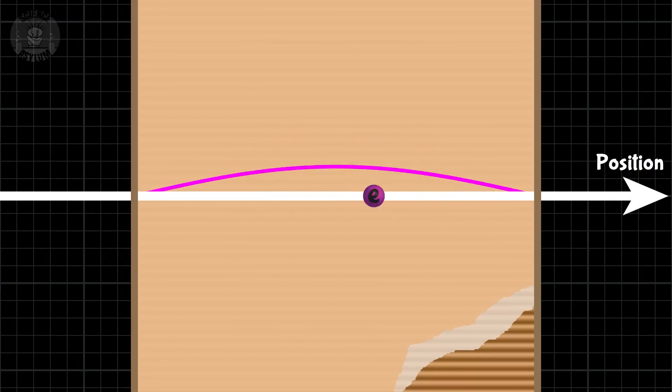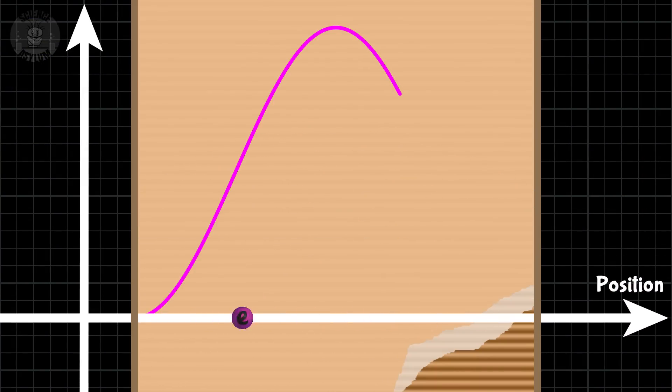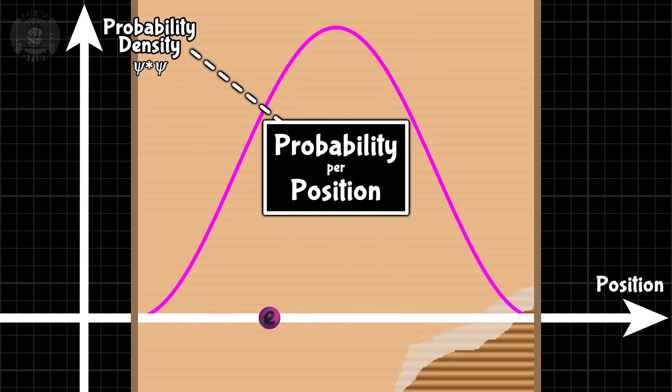Jokes aside, now that we have only real parts, we can actually make physical sense of this. Instead of looking at the quantum wave function itself, we look at its complex square, something we call the probability density. In this case, it's a probability per unit length measured along our one-dimensional box.